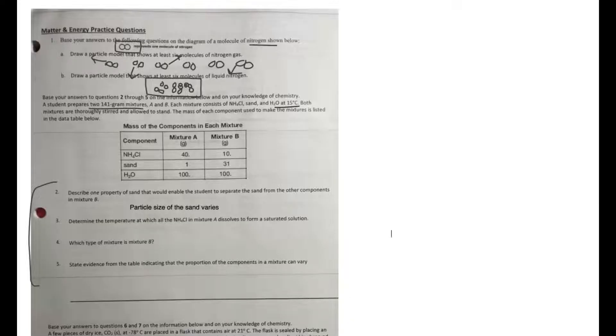Number three says determine the temperature at which all the NH4Cl in mixture A dissolves to form a saturated solution. For this question, you're going to want to have your reference table. If you go to table G, find NH4Cl, and then we want to dissolve, what is this for, mixture A. So in mixture A, there's 40 grams of NH4Cl. So we just click on the left side at 40 grams, line up to the NH4Cl, we can see it's in between 20 and 30 at the temperature. So we can just say it's around 25 degrees Celsius.